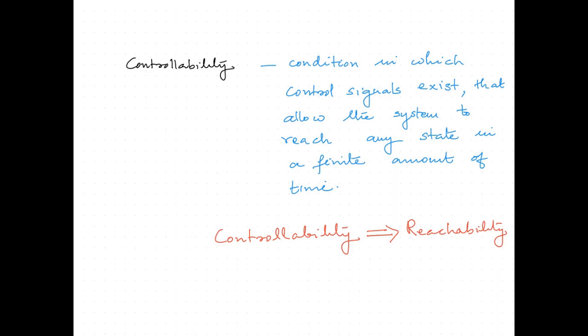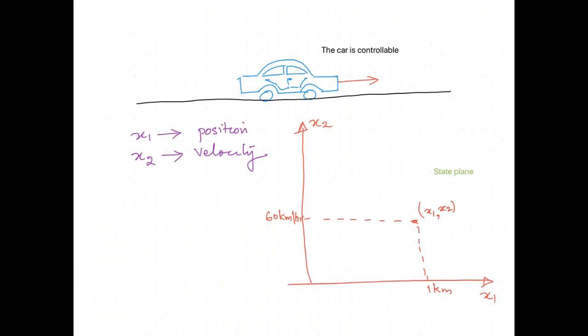Here we consider a simple definition for controllability: it is a condition in which control signals exist that allow the system to reach any state in a finite amount of time. Hence controllability basically implies reachability. Controllability does not mean that the system states must be held at a particular value; it is only required that the states can be reached.